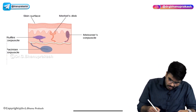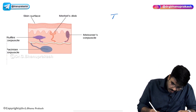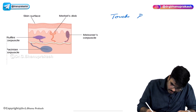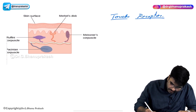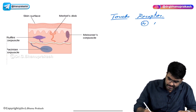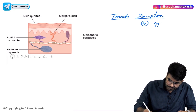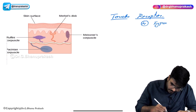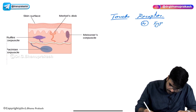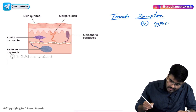Welcome back guys. Now let's discuss about touch receptors. How many types of touch receptors are there? There are four types of touch receptors.